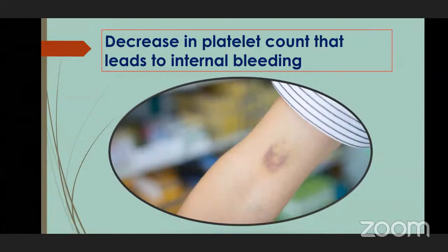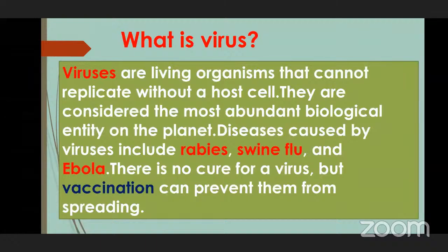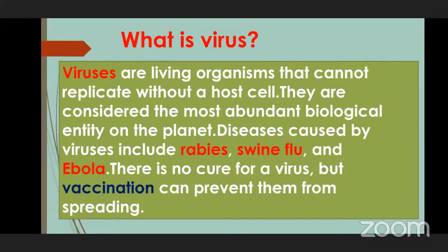Infectious diseases also spread due to insects and animals. Let's see a disease which spreads due to pigs and viruses. Viruses are small living organisms — they cannot replicate without a host cell. Diseases caused by viruses include rabies, swine flu, and Ebola. Right now coronavirus is also going on. There is no cure for a virus, but vaccination can prevent it from spreading. So we will see one of the diseases that spreads due to pigs — that is swine flu.